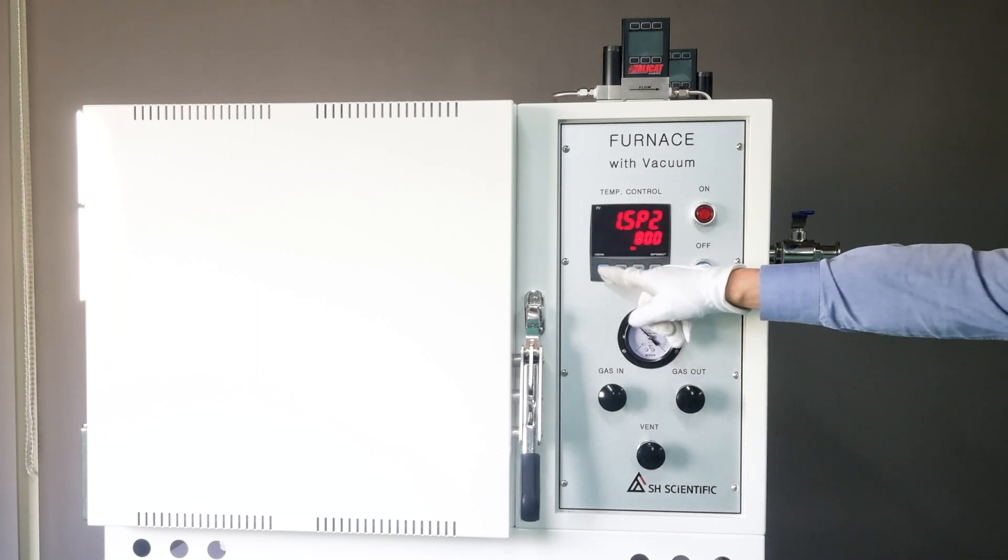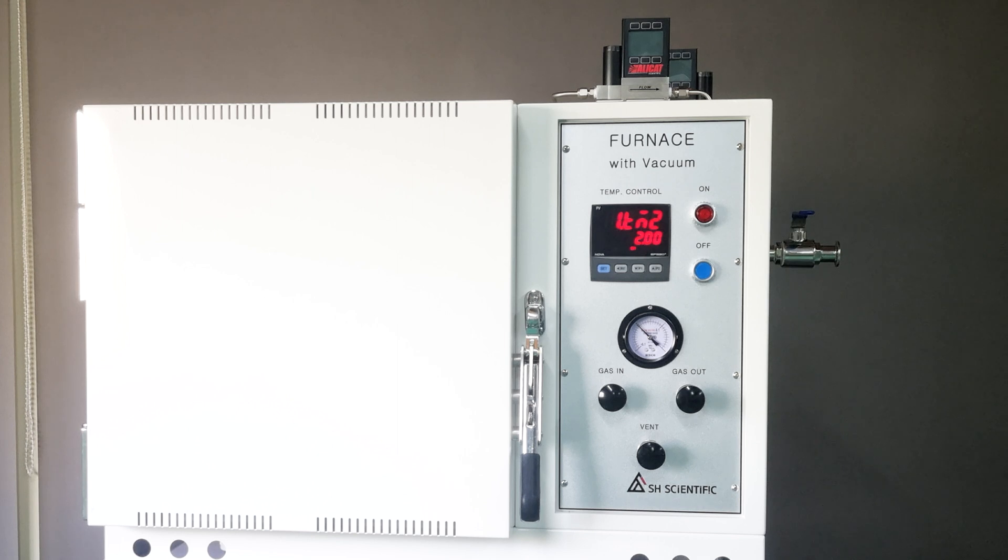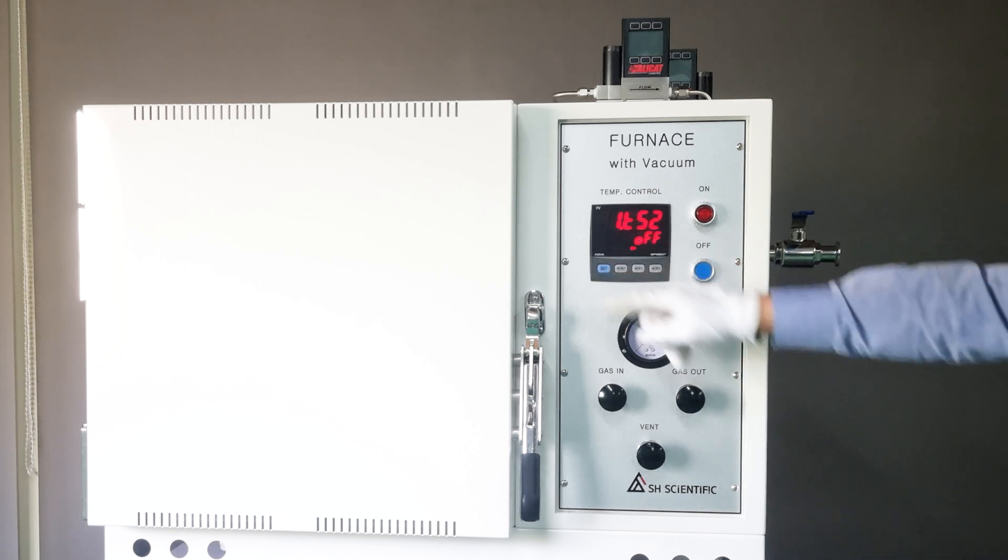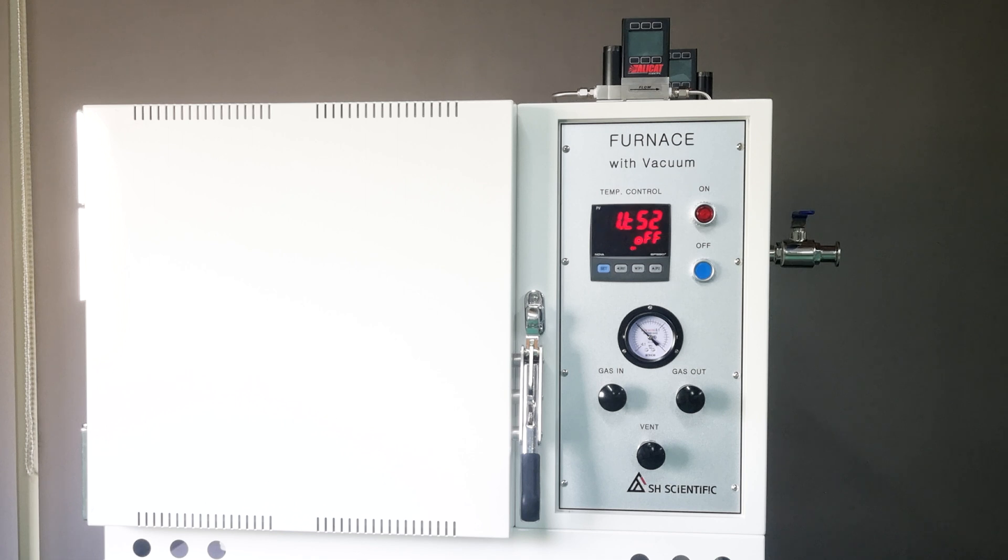Now, click set, and you'll see 1TM2. I've entered 2 hours here. So once the furnace reaches 800 degrees Celsius, it will hold for 2 hours. Hitting set again brings up 1TS2, which we don't use, so we'll keep it off.